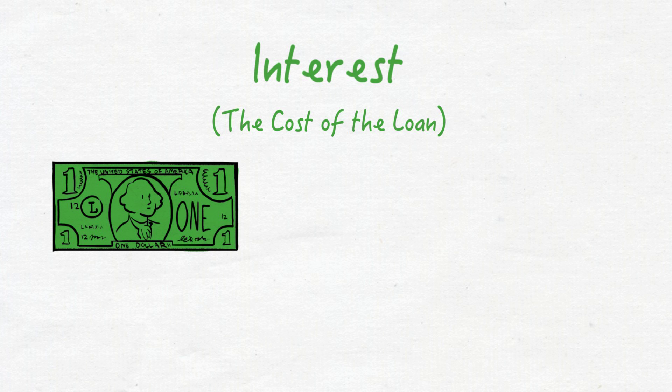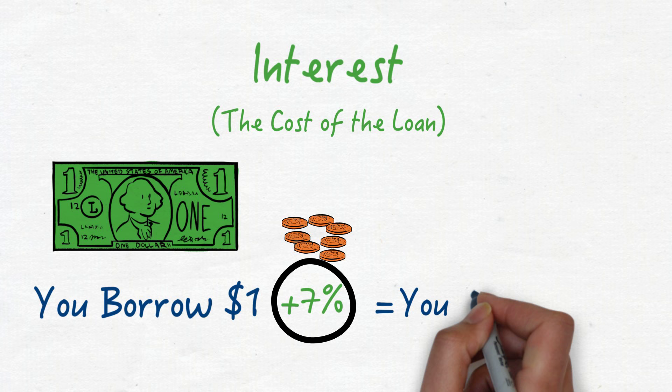Now let's talk interest. The interest is how much it costs to take out the loan, on top of the principal you'll be paying back. The amount you pay for every dollar borrowed is expressed as a percentage rate. For example, 7% means 7 cents per dollar borrowed. The higher the interest rate, the more expensive the loan.